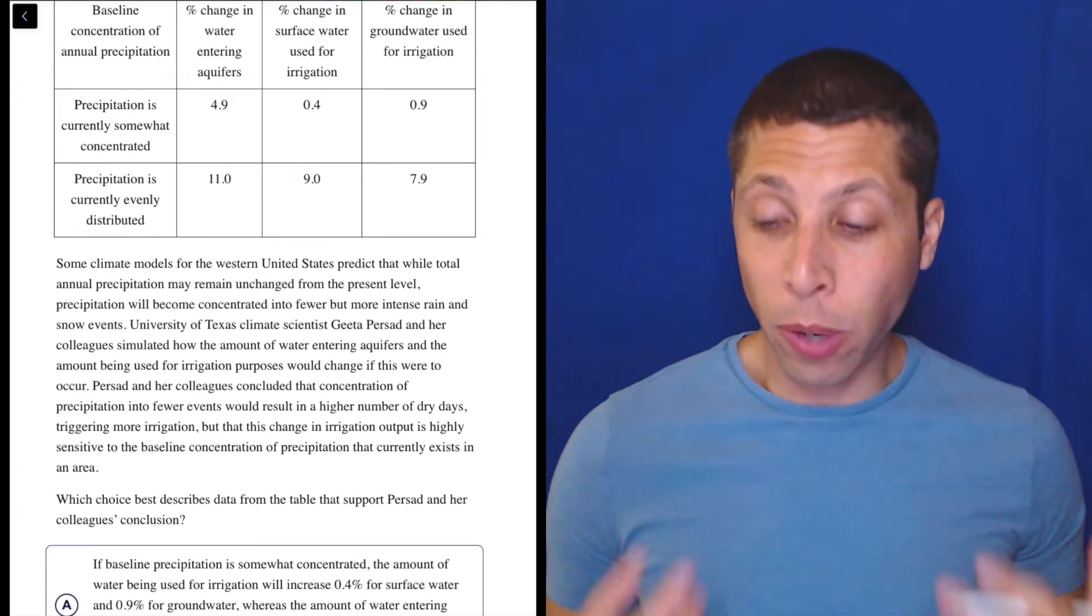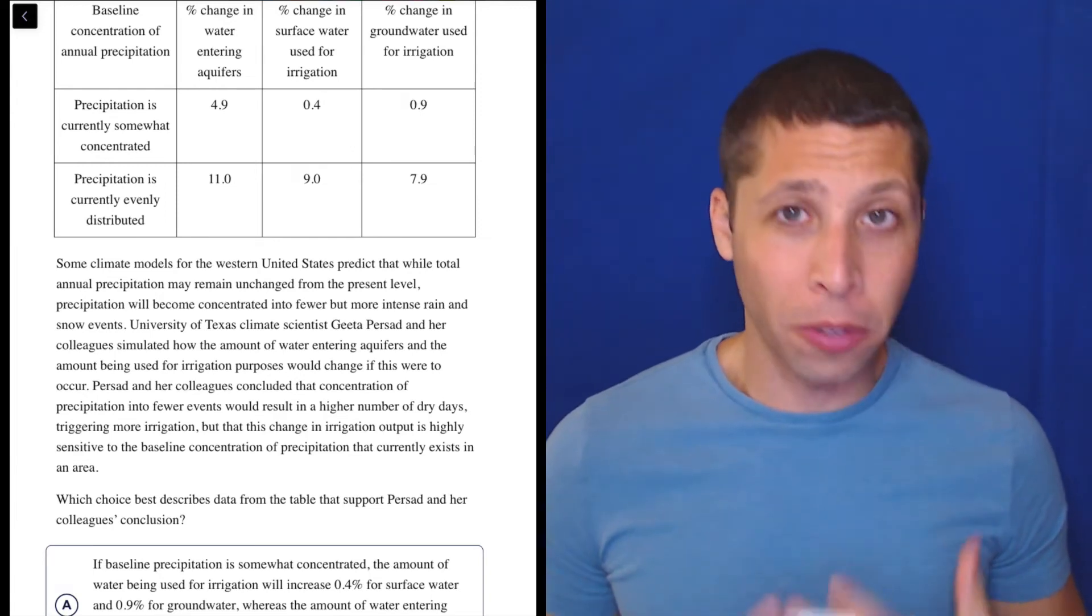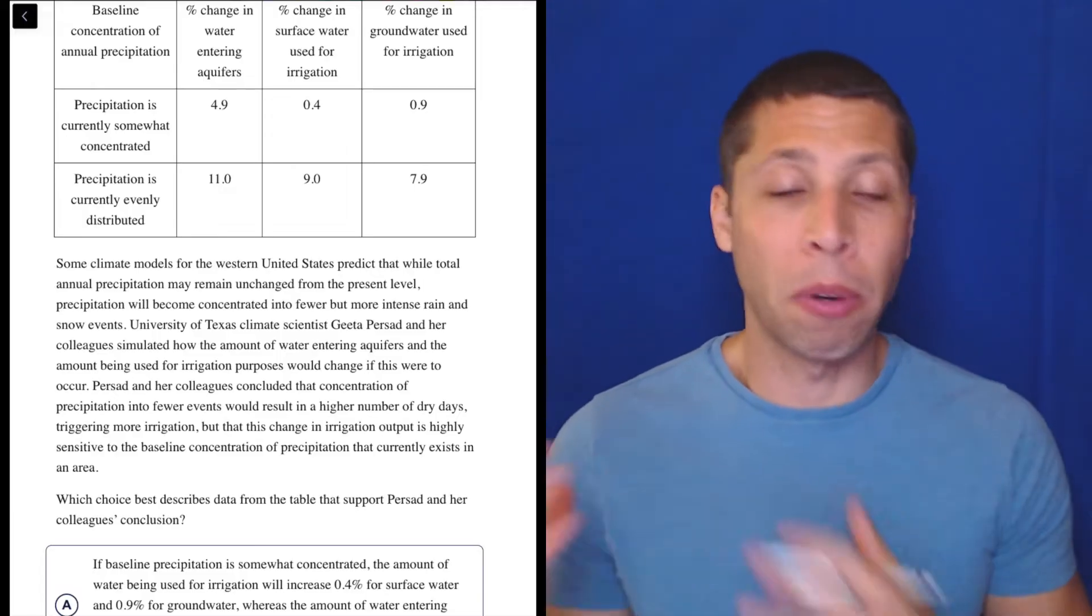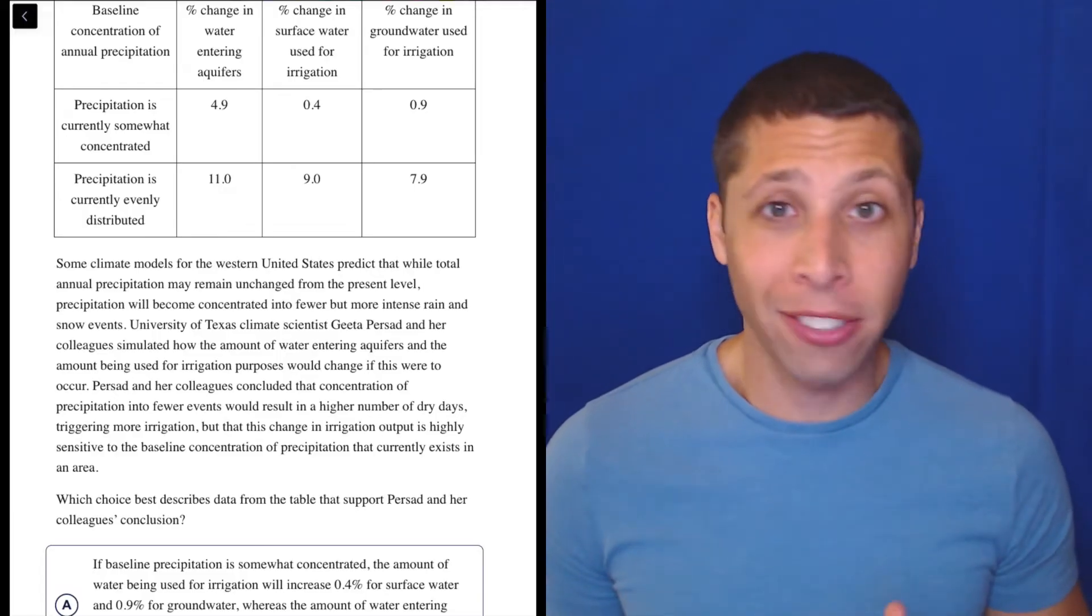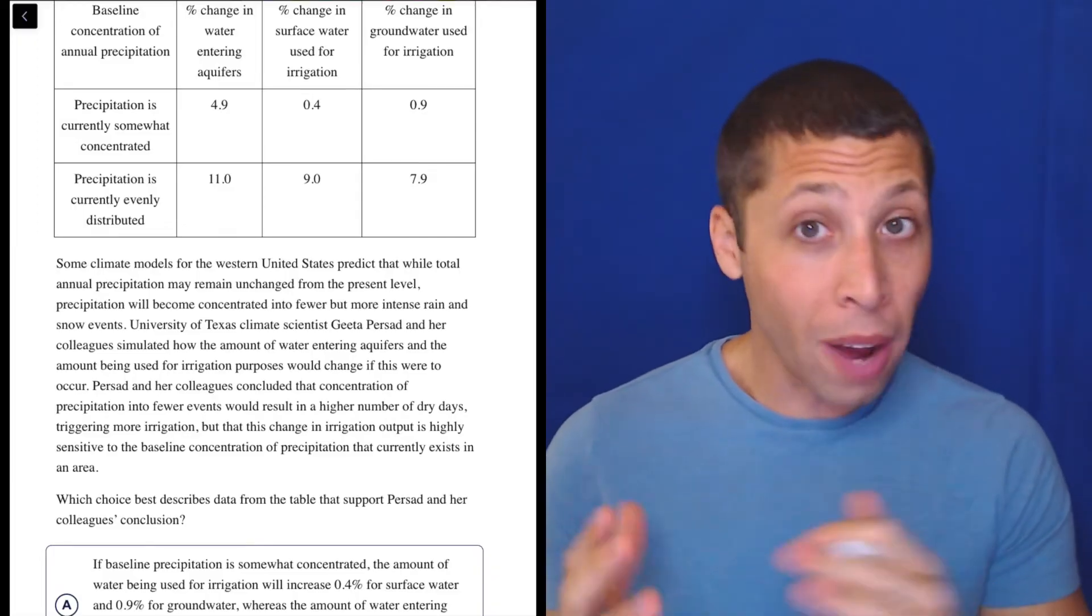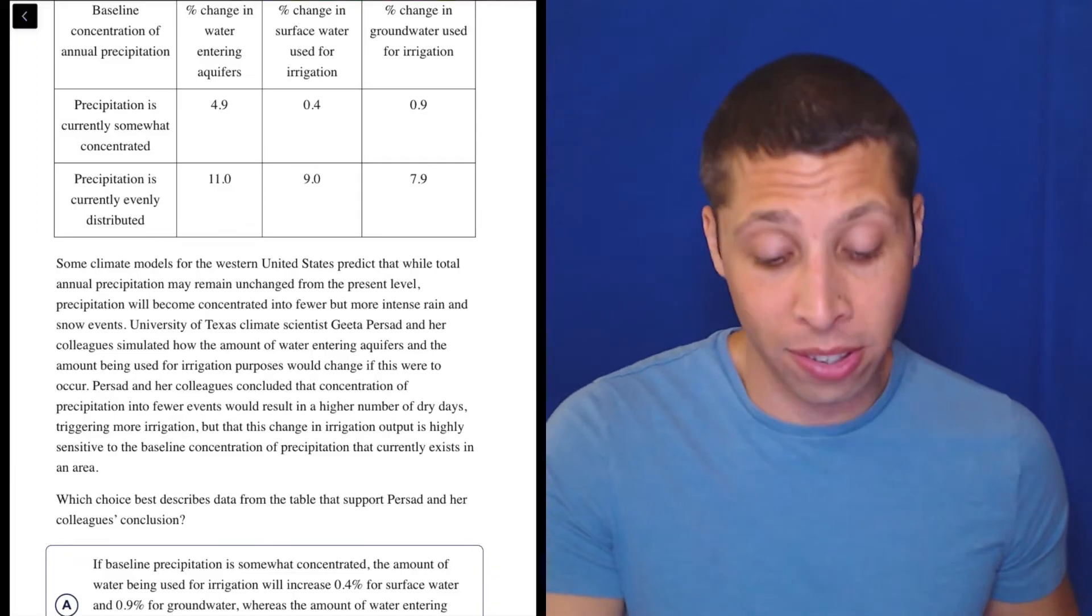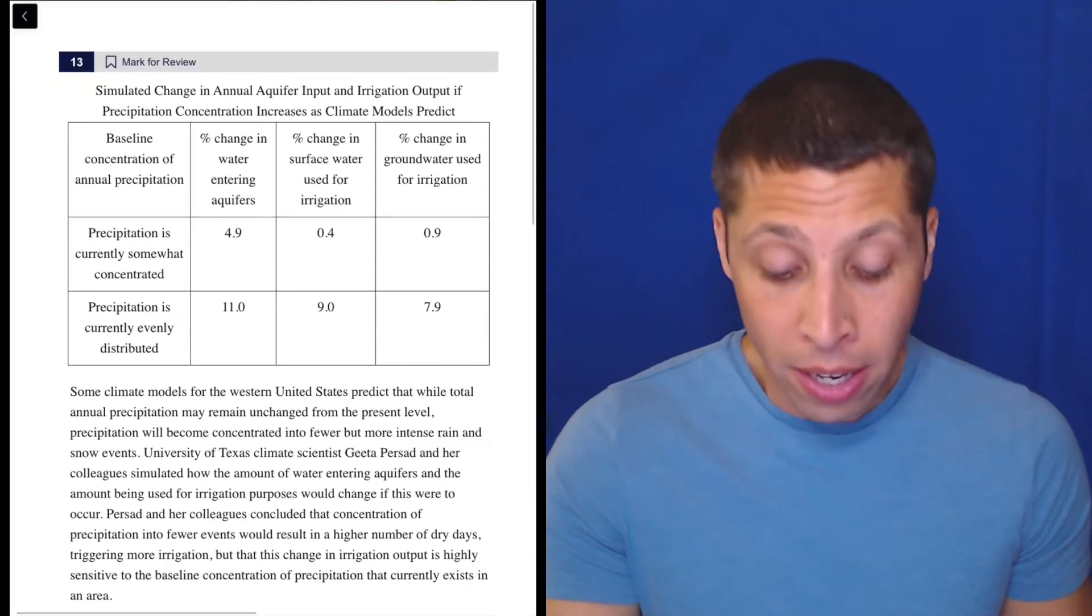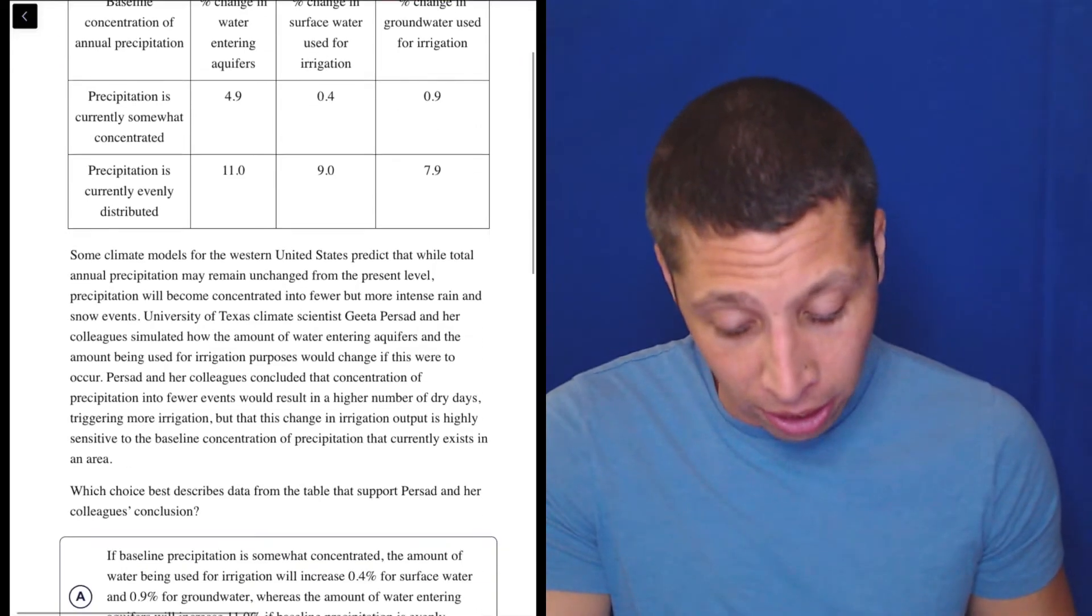This question highlights one of the biggest challenges in the hard reading module: the question difficulties do not increase as you go. We're moving between different types of passages, different types of questions, and the difficulty is all over the place. So you have to get good at picking out easy questions. Compared to some of the other ones we just did, number 12, number 11, this is a piece of cake. Let's take a look.